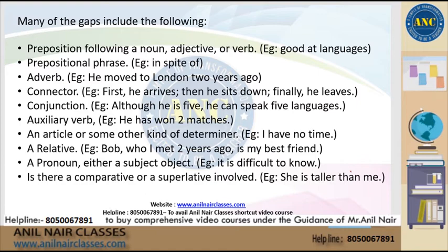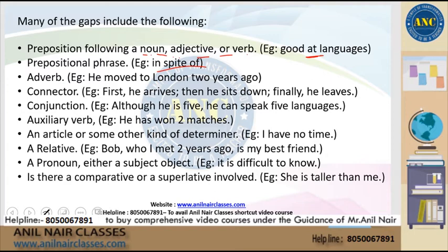Let's look at how these blanks can be filled. Sometimes you could use a preposition — a word that is followed by a noun, adjective, or adverb. For example, 'good at languages' — here 'at' is the preposition. It could also be prepositional phrases, which contain a preposition followed by a noun or adjective, such as 'in spite of.' When you know such common phrases, it helps you quickly answer the blank.